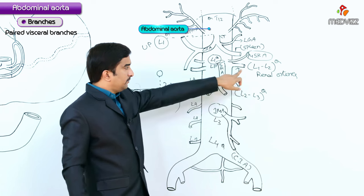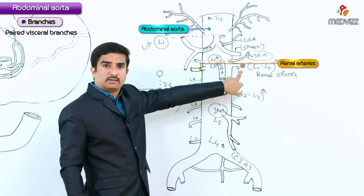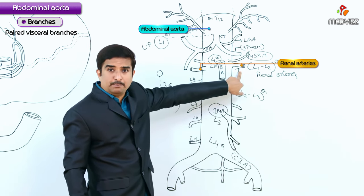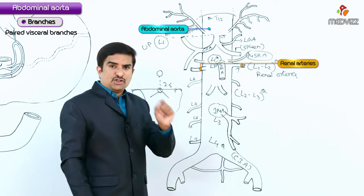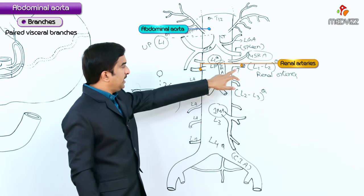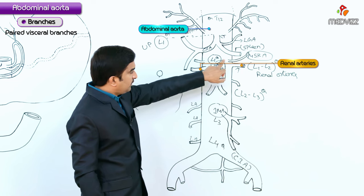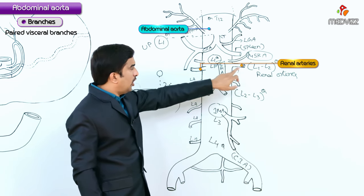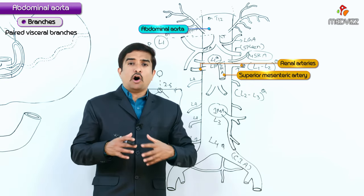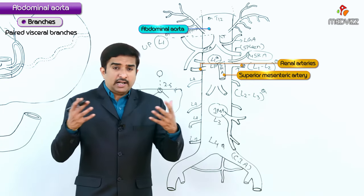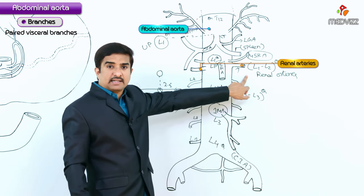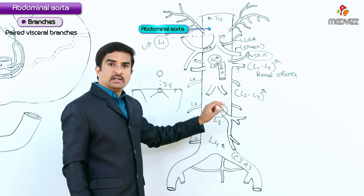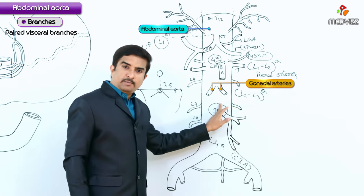The renal arteries are lateral branches of the abdominal aorta that arise just inferior to the origin of the superior mesenteric artery. Their vertebral level origin is between L1 and L2. These arteries supply the kidneys.